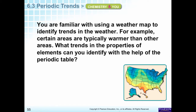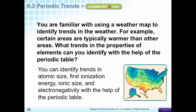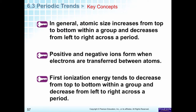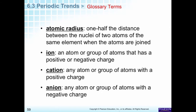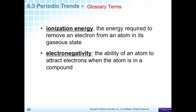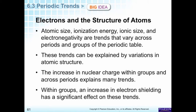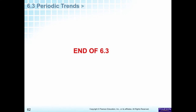The four periodic trends we talked about are: atomic size, ionic size, ionization energy, and electronegativity. Here are the key concepts and definitions — stop the video and take these notes. The big idea: atomic size, ionization energy, ionic size, and electronegativity are trends that vary across periods and groups of the periodic table, and these trends can be explained by variations in atomic structure. The increase in nuclear charge within groups and across periods explains many trends. Within groups, an increase in electron shielding has a significant effect. See you next time.